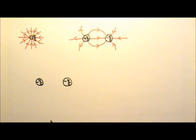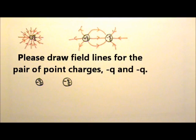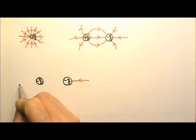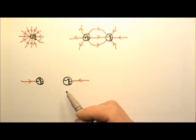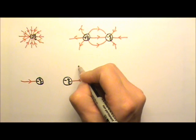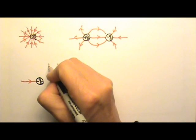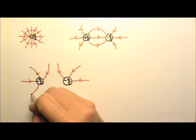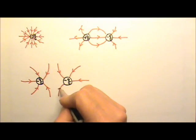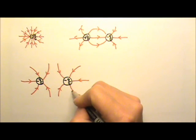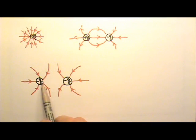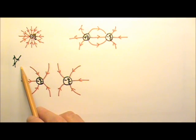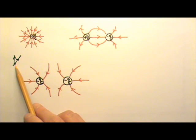What if it's negative 1Q and negative 1Q right next to each other? The lines will still go into each negative charge, but there are no positive charges nearby for the lines to originate from, so all the lines originate from infinity. Field lines cannot cross, so they have to avoid each other. Since they are the same amount of charge, it's symmetric on the two sides. Field lines should never cross each other, because the direction of a field line must match the direction of the electric field at that location, and there is only one direction for the electric field at any one point.